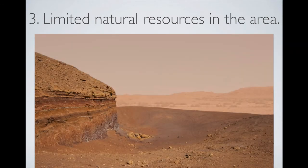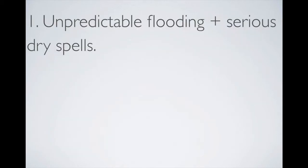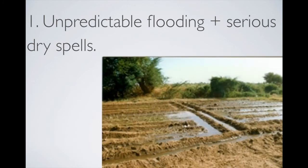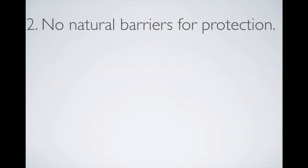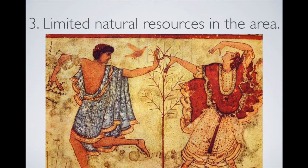The third disadvantage was limited natural resources. The three solutions people came up with were: one, build an irrigation system to manage flooding; two, if you don't have natural barriers, create artificial ones — brick walls; and three, trade with nearby civilizations to make up for the lack of natural resources such as stone, wood, and metal.